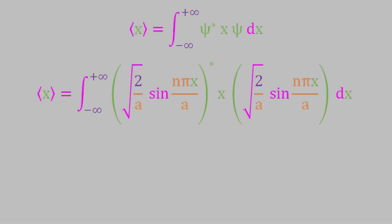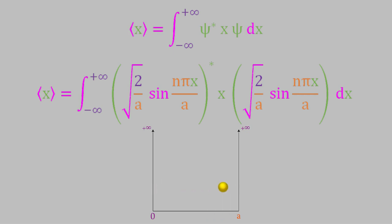Let's go ahead and solve this equation. But before we do that, think about this system—the particle-in-a-box—and what it's like. The system can move freely inside the box, and based on that, where do you suppose the most likely position of the system would be? You might want to pause the video for a minute and try to make your best guess before we solve the equation.